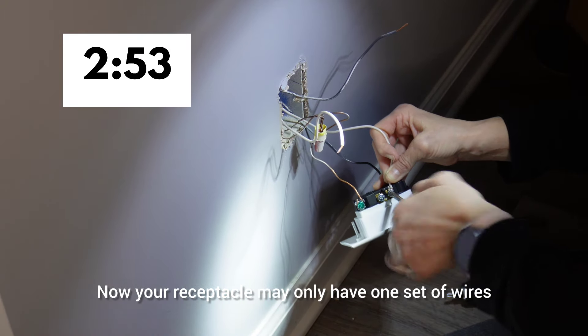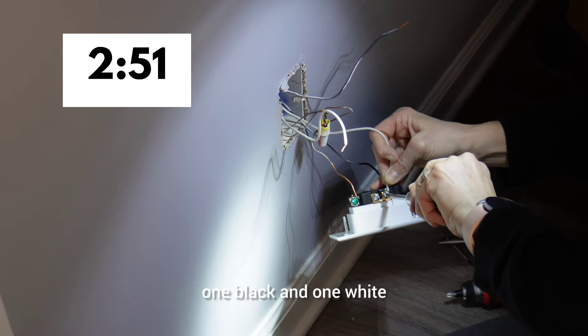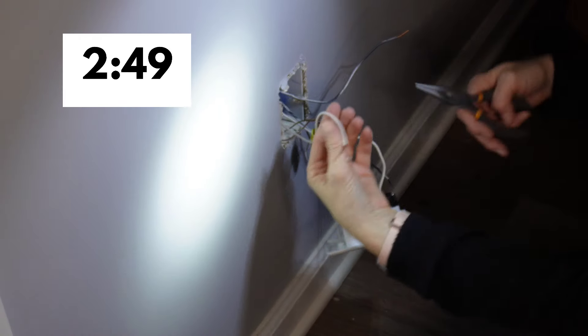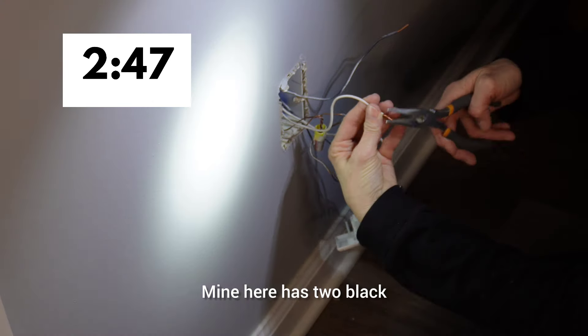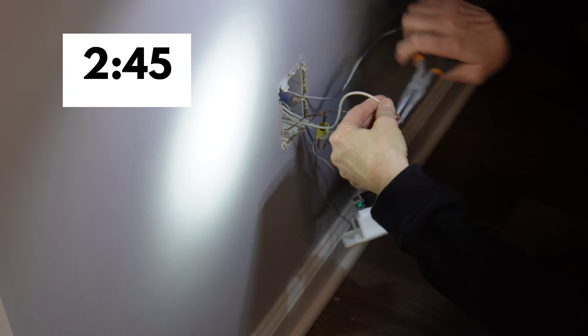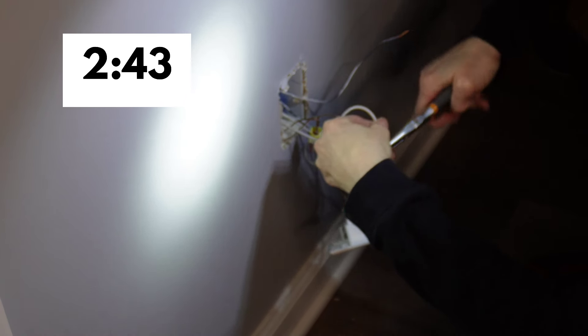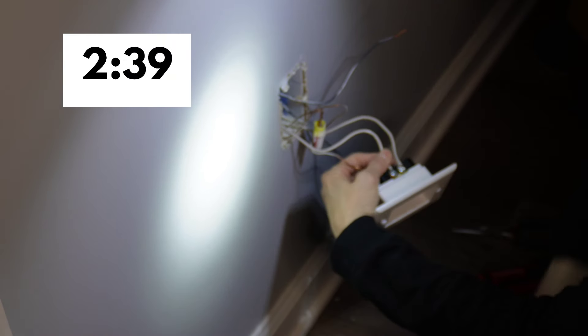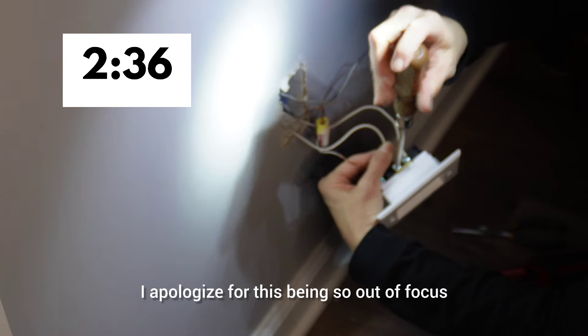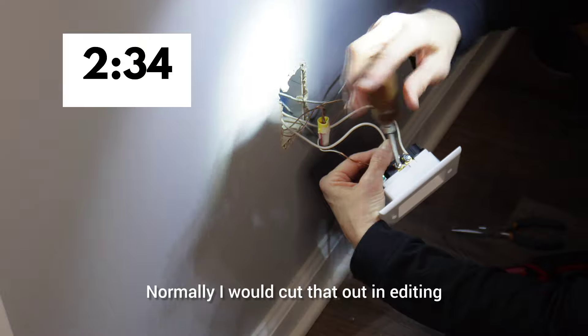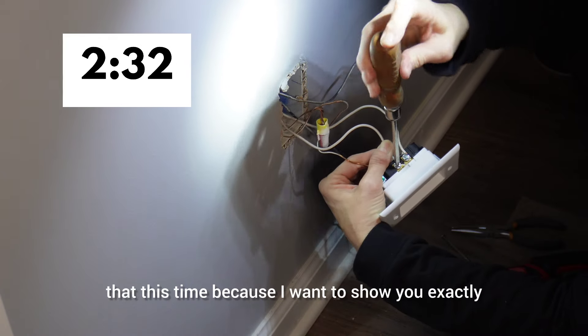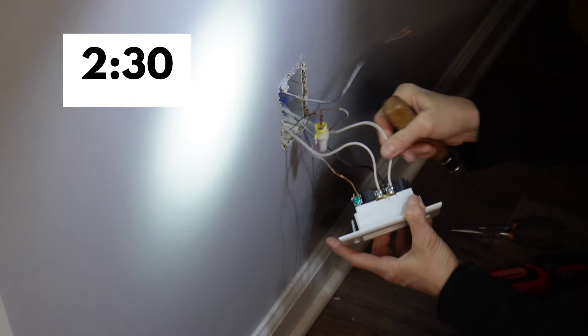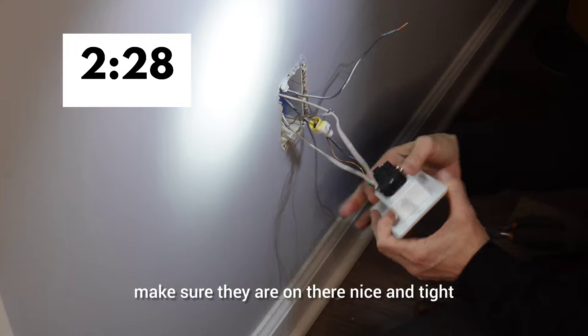Now your receptacle may only have one set of wires, one black and one white, and that's fine. Mine here has two black and two white. So we're going to hook those all up. Again, we're going to make another loop. And we're going to attach it to the silver screws. And then tighten it up. I apologize for this being so out of focus. Normally, I would cut that out in editing, but I'm not going to do that this time because I want to show you exactly what I'm doing here. So give those a tug, make sure they are on there nice and tight.